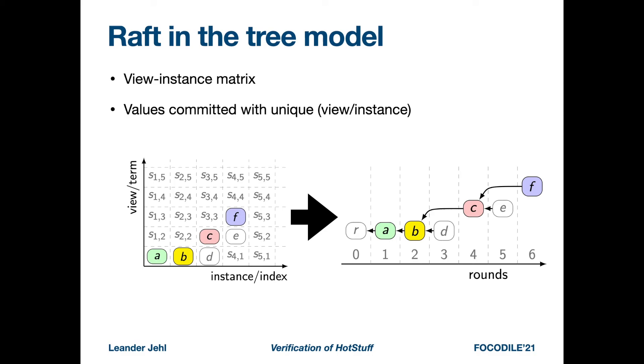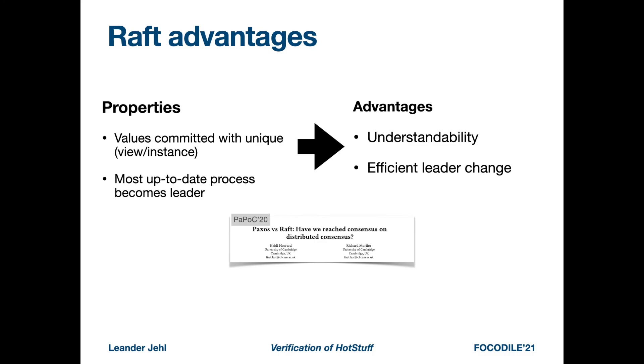Since the view instance tuples are unique, we can transfer Raft to the tree model. To do this, we sum up the view and the instance to become the round. Please excuse, the figure is slightly wrong. In the figure, it's actually the view plus the instance minus 1, since the views here start with 1 and not with 0.